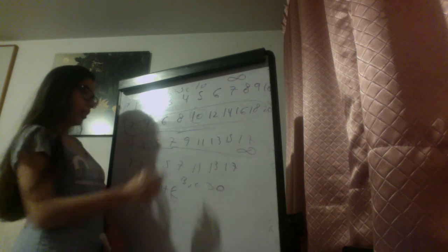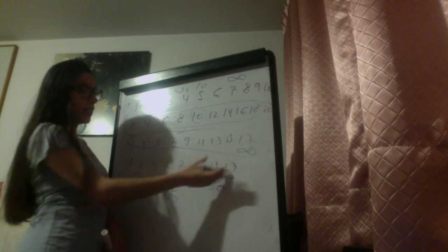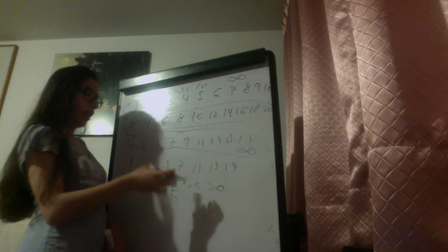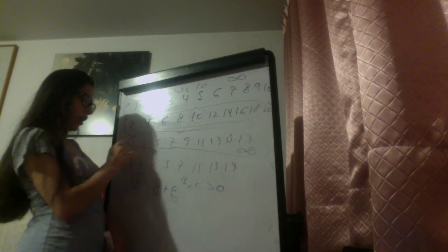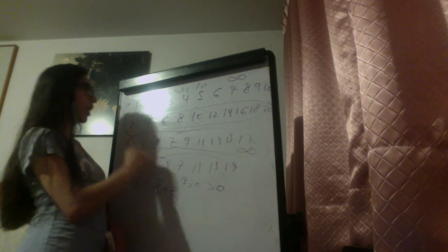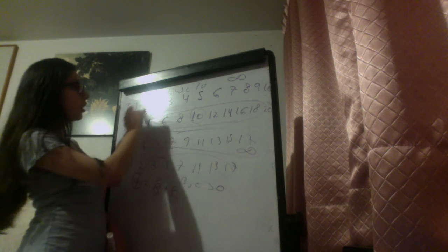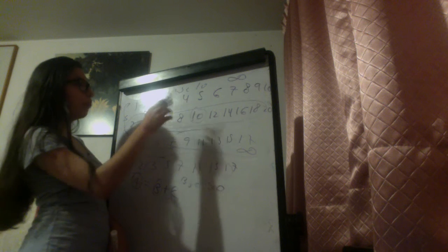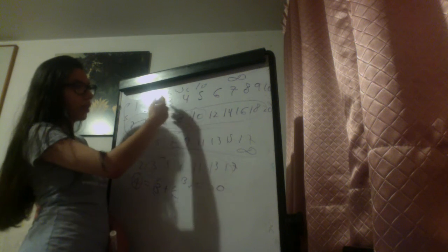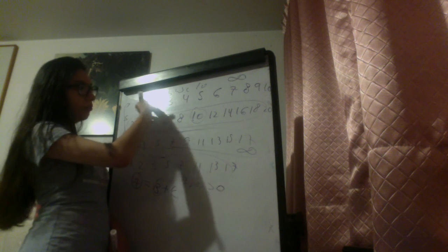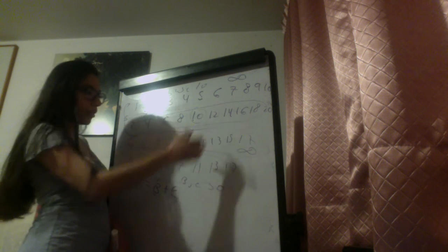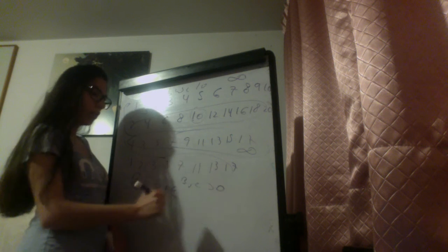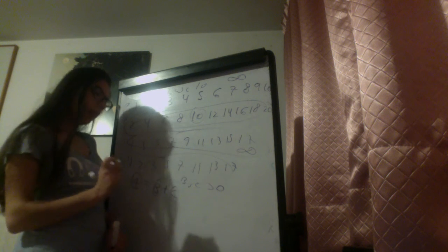The same applies for the even numbers and the same for the prime numbers. All these numbers are included in the natural number set, but the natural number set also contains other numbers. So this infinity is greater than the infinity of the prime numbers.